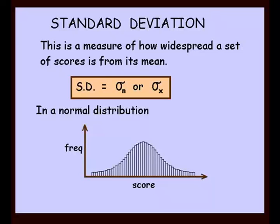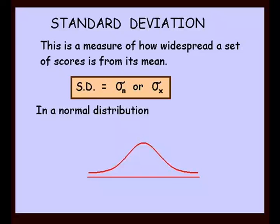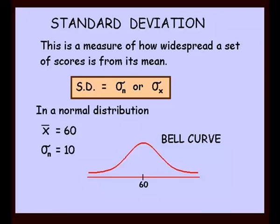In a normal distribution, where score and frequency are labelled, if we draw a curve it would be known as a bell curve. So in a normal distribution we get that bell curve. Consider an example where the mean is 60 — recall the symbol for mean is x with a bar across it. So we have a mean of 60 and a standard deviation of 10. From the bell curve, the mean will be right in the middle.